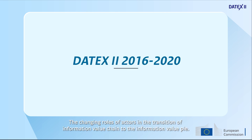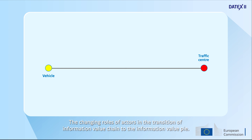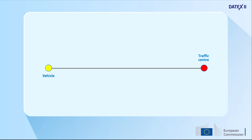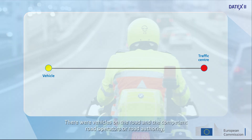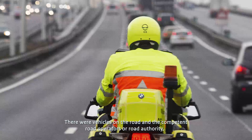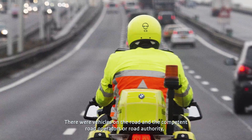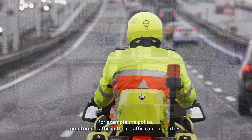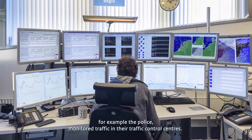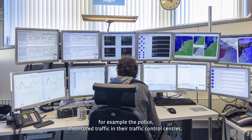The changing roles of actors in the transition of information value chain to the information value pie. The first generations of ITS had a linear information flow. There were vehicles on the road and the competent road operators or road authority, for example the police, monitored traffic in their traffic control centers.